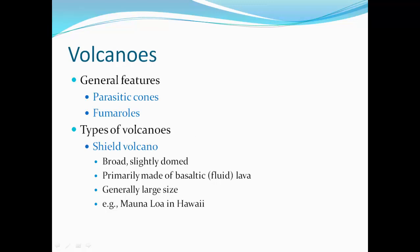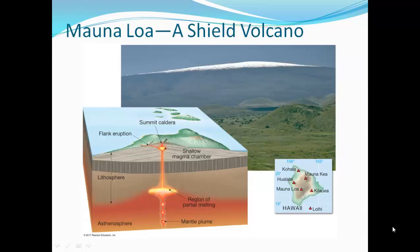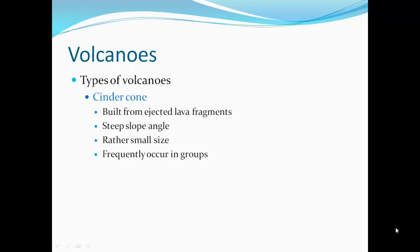There are three major types of volcanoes. The shield volcano is a broad, slightly domed volcano, primarily made of basaltic lava with very fluid flowing lava. It's generally very large in size. An example is Mauna Loa in Hawaii — a very broad, low, very large shield volcano with a nice summit caldera. It has a shallow magma chamber with pipes or conduits, and a region of partial melting.